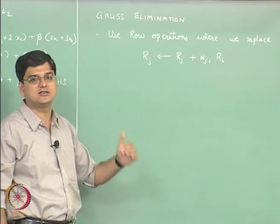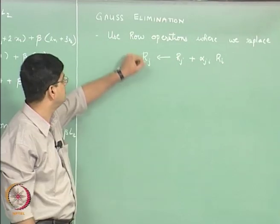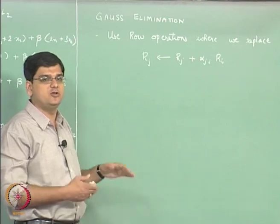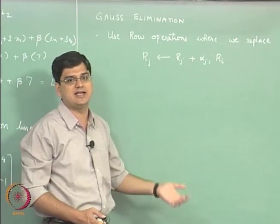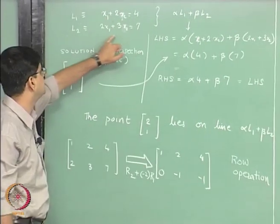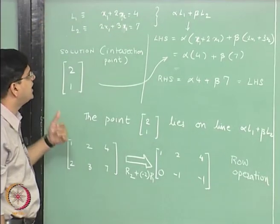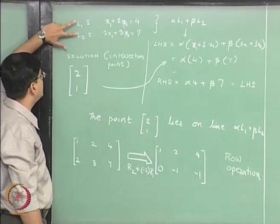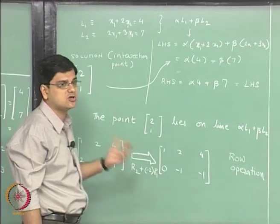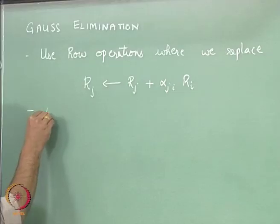So we replaced one of the lines with a linear combination of the two lines that we had in the previous equation. So this is one type of row operation. The second type of row operation is we know that it does not matter whether we call one particular line L1 and L2. Instead of calling this line as L1 and this line as L2, we could have very well called this line as L2 and this line as L1 and it would not have made any difference. That means, by exchanging the two rows, the solution of the overall linear equations also remains the same. So the other type of row operation possible is exchange of rows.